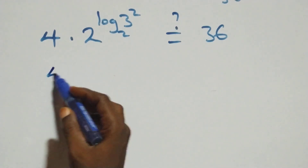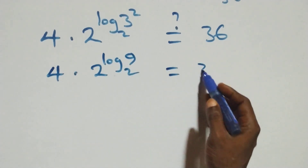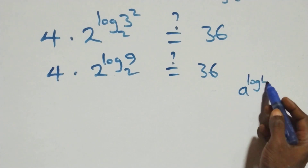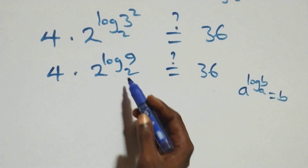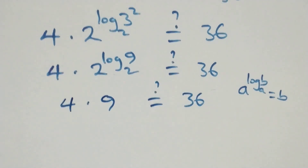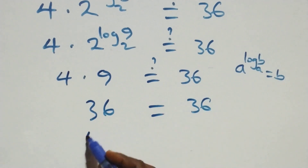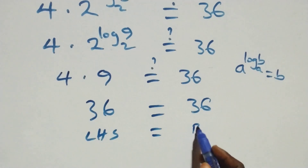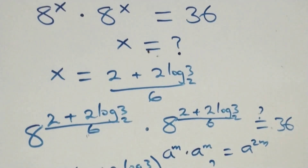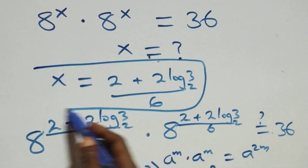This becomes 4 times 2 raised to power log 9 base 2, which equals 36. This follows from the identity a raised to power log b to base a equals b, so 2 raised to power log 9 base 2 equals 9. Thus 4 times 9 equals 36, which equals 36 on the right-hand side. The left-hand side equals the right-hand side, so we conclude that x equals (2 plus 2 log 3 base 2) all over 6 satisfies the given problem.